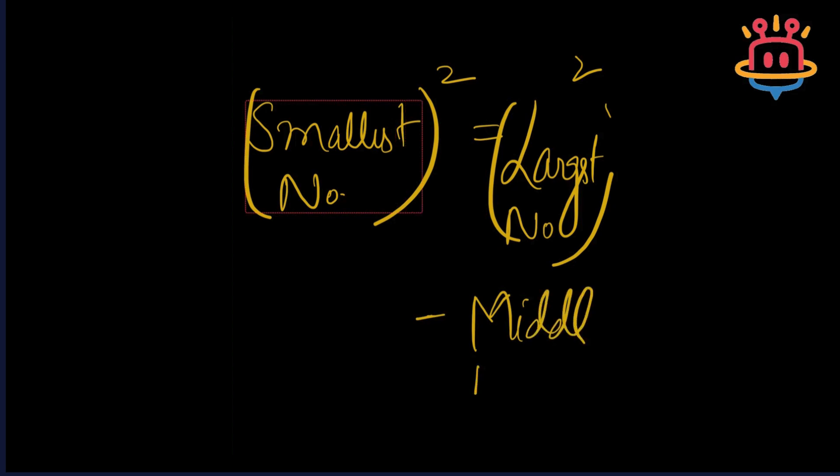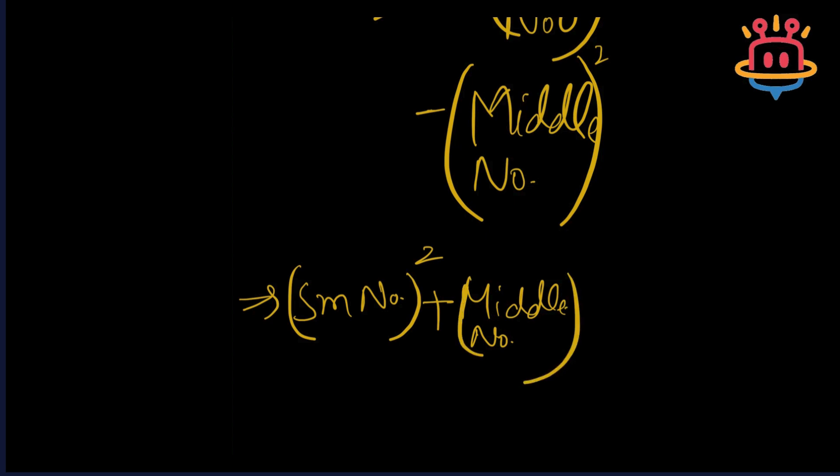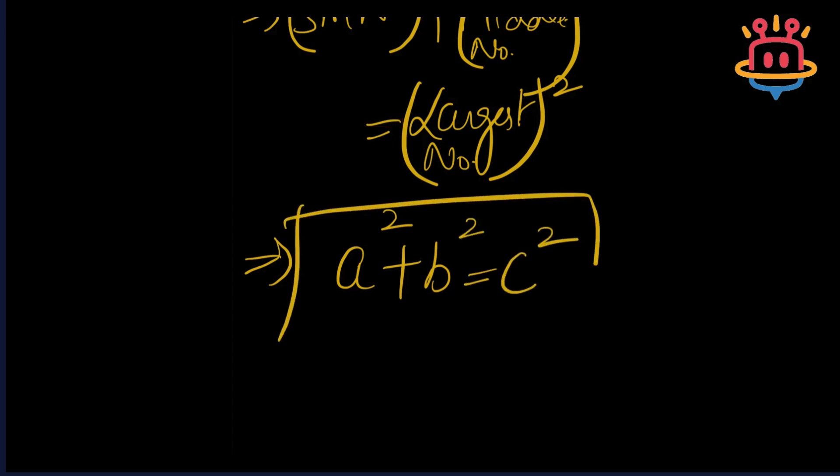Or you can rewrite it as smallest number whole square plus middle number whole square is equal to largest number whole square, or even in a more simplified form as a² + b² = c². So my dear adventurers, this is our magic formula which we are going to use here.